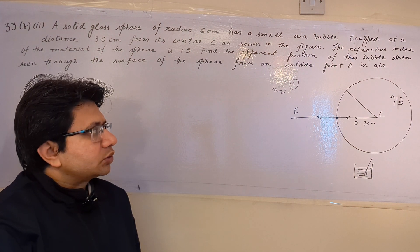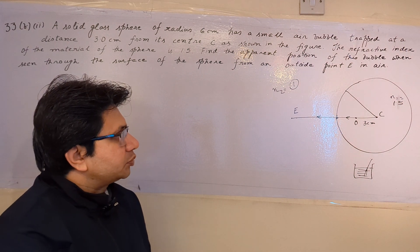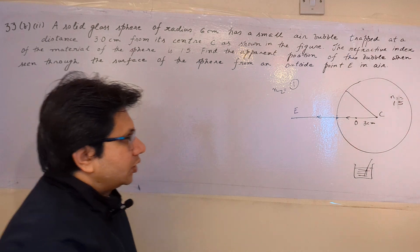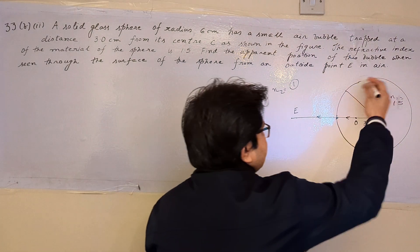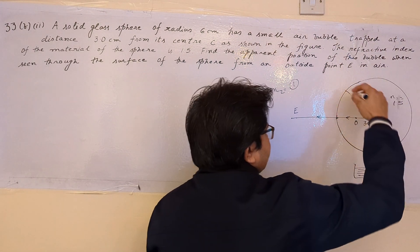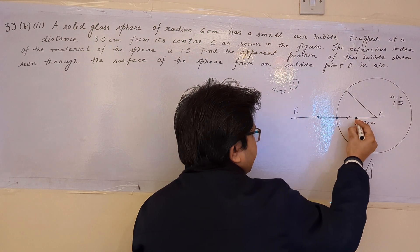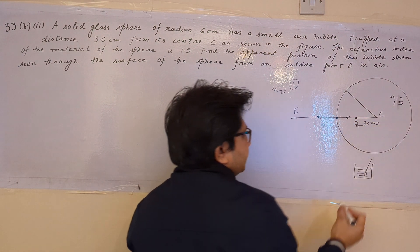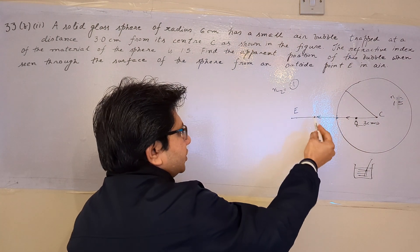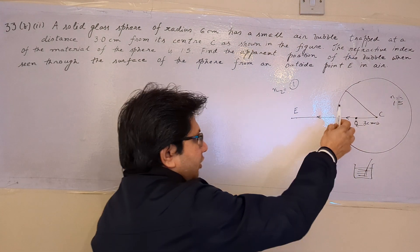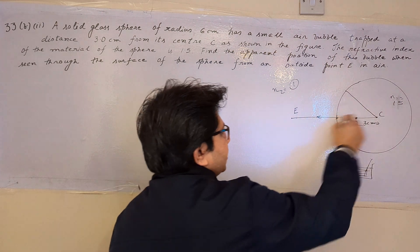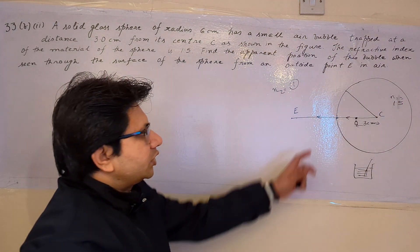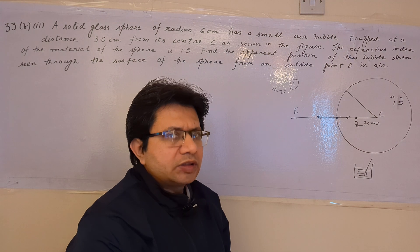This problem is based on the topic of optics, and in this particular problem we have to calculate the apparent position of this air bubble. The situation is: there is a glass sphere, and inside this glass sphere there is a bubble at a distance of 3 cm from its center. Suppose a person is outside this sphere, observing from the left-hand side. Then what is the apparent position of this particular bubble? That is the question.